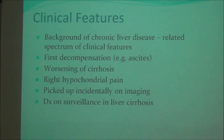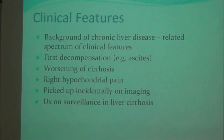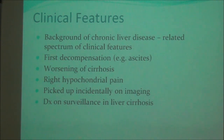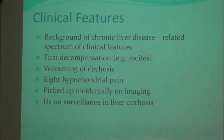Decompensation can present in the form of ascites, abdominal pain, jaundice, variceal bleeding, or hepatic encephalopathy. Sometimes a previously known patient with cirrhosis develops worsening of clinical features — for example, ascites may become refractory, or deep hepatic encephalopathy may develop. Patients can also have right hypochondral pain because of the presence of the tumor. In some patients there are no symptoms and they are picked up incidentally on imaging for an unrelated cause.